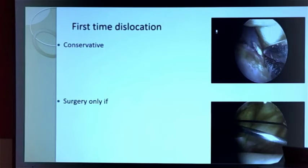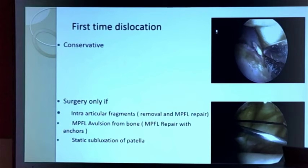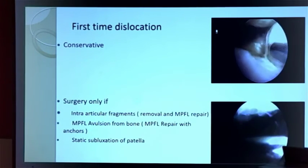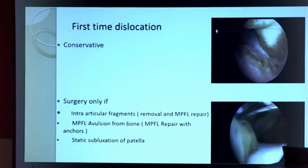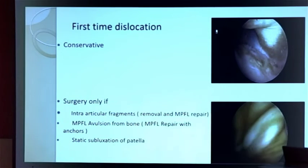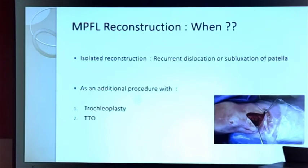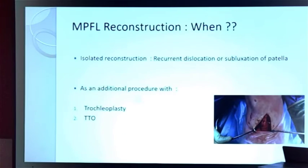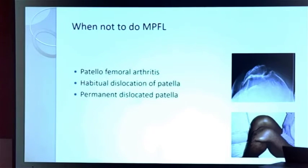For a first-time dislocation, I always manage conservatively, but there are exceptions. If the patient has an intra-articular fragment, you need to remove the osteochondral fragment arthroscopically, and I usually combine this with arthroscopic MPFL repair. If there is an MPFL avulsion from the bone, repair is also required. MPFL reconstruction is indicated in all cases of recurrent dislocation; if there are associated bony pathologies, add trochleoplasty and TTO. Without addressing bony pathology, MPFL will fail or the patient will develop patellofemoral arthritis. MPFL is contraindicated when the patient has already developed patellofemoral arthritis, or in habitual or permanent patella dislocation.